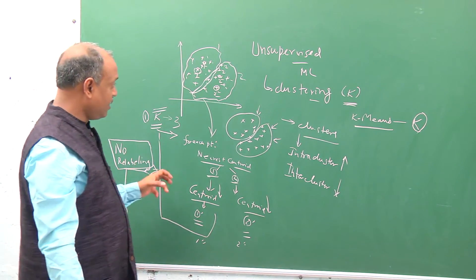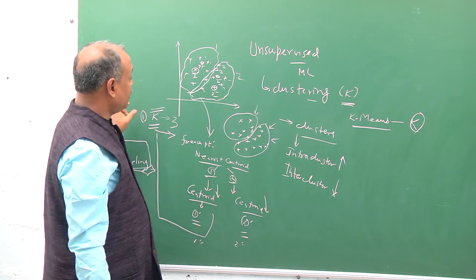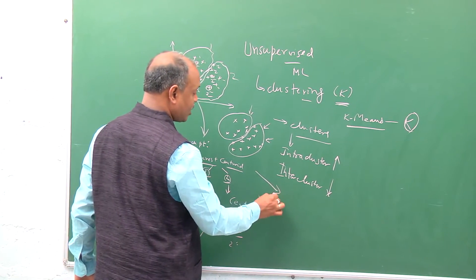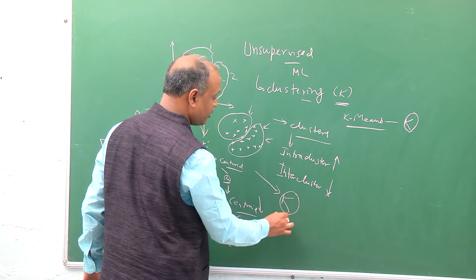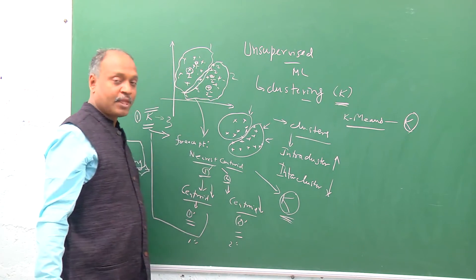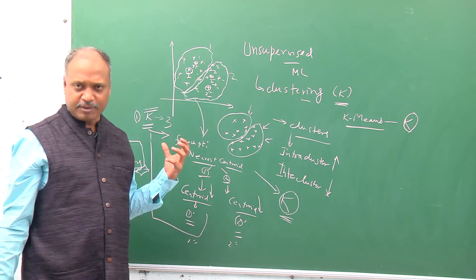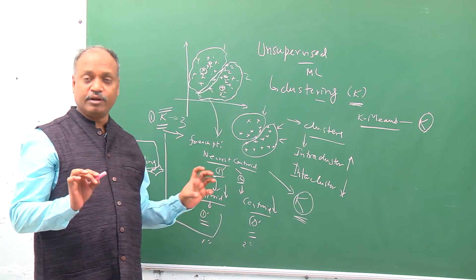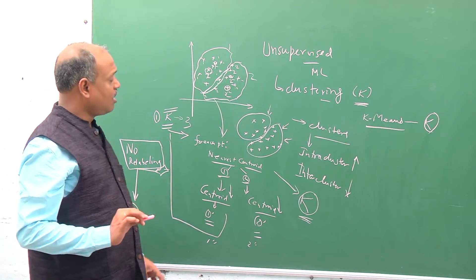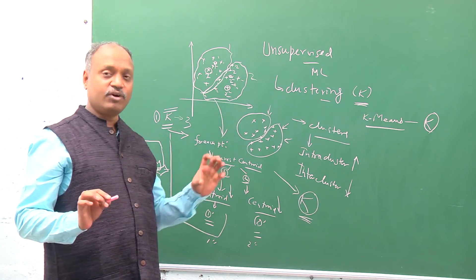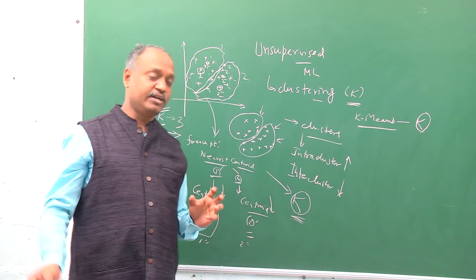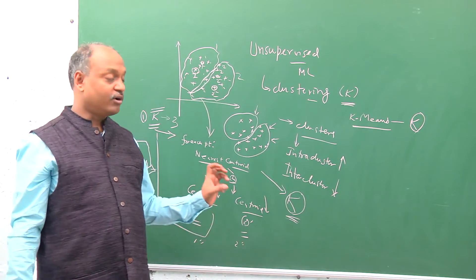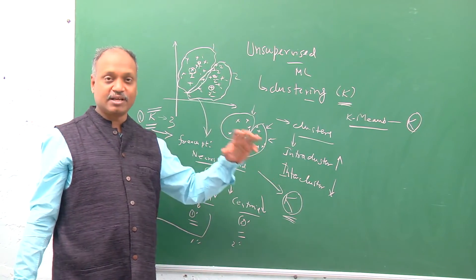The beauty of this is that we can actually also iterate over different values of k and by different kinds of inspection mechanisms, either by looking at relative distortion between different cluster sizes or by looking at whether one cluster is very sparse or very dense, we can try to find out which is the right k for our purpose and we can freeze that as the right number of clusters for the original data.